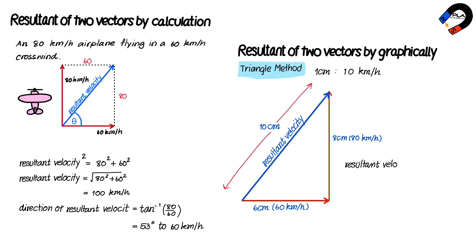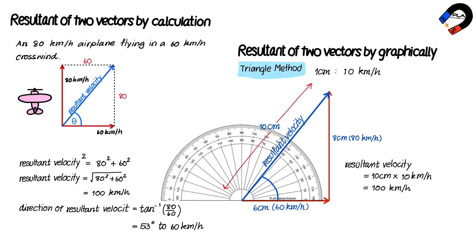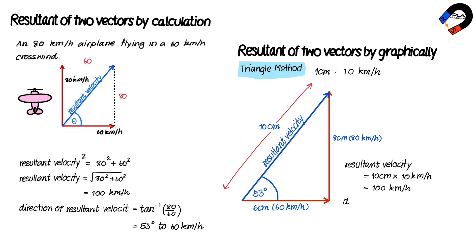The magnitude of the resultant velocity is 10 centimeters times 10 kilometers per hour, which equals 100 kilometers per hour. Measure the angle between the 60 kilometers per hour vector and the resultant velocity — the direction of the resultant velocity is 53 degrees to the 60 kilometers per hour direction.